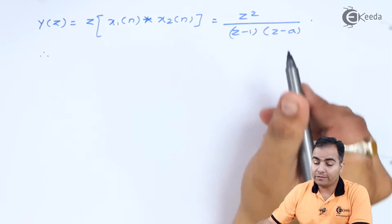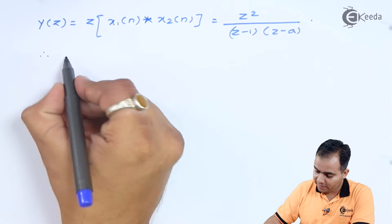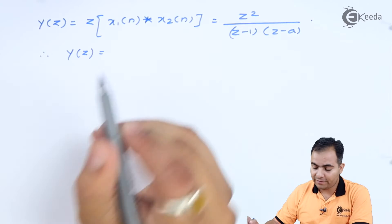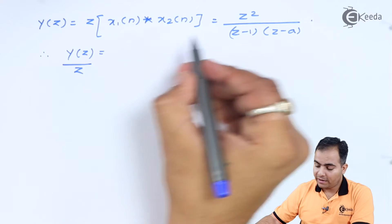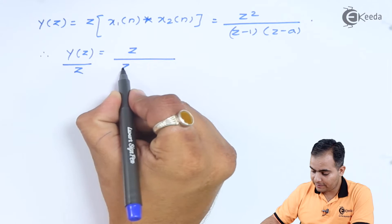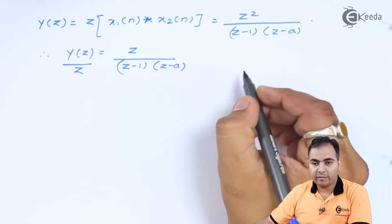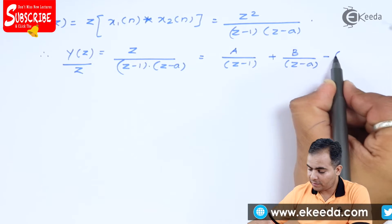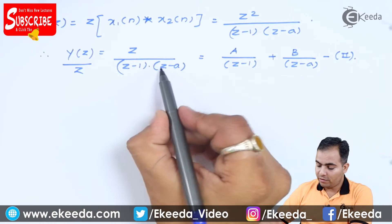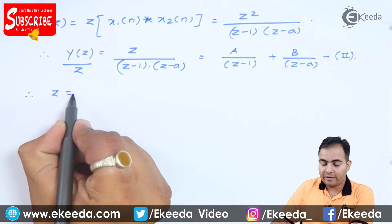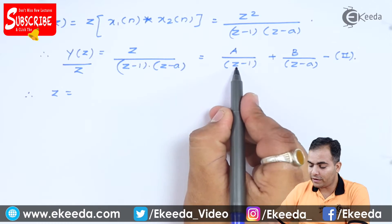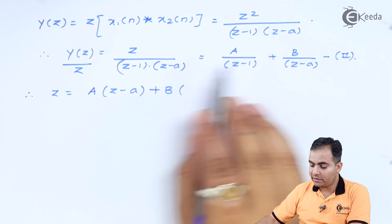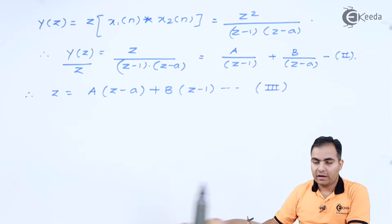For partial fractions with two factors, we use two different constants A and B. We shift one z to the left-hand side denominator, writing Y(z)/z = z / [(z − 1)(z − a)] = A/(z − 1) + B/(z − a). This is equation number 2. Multiplying through, we get: z = A(z − a) + B(z − 1). This is equation number 3.